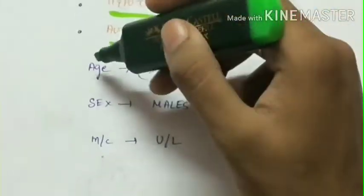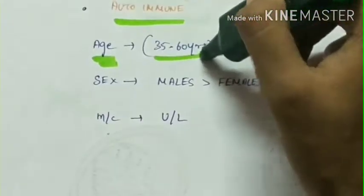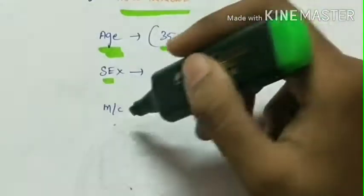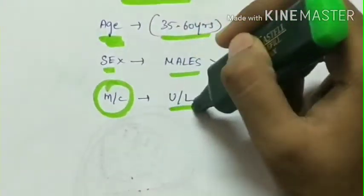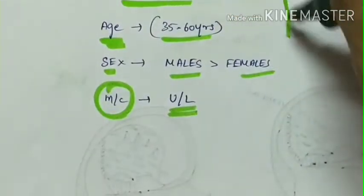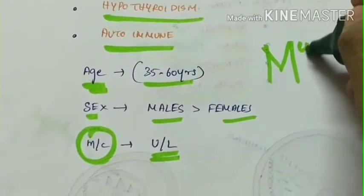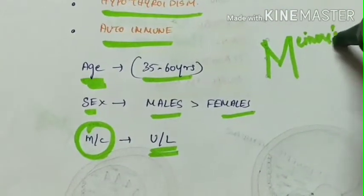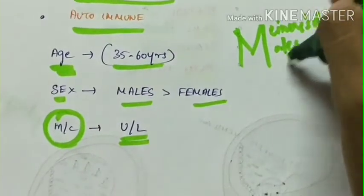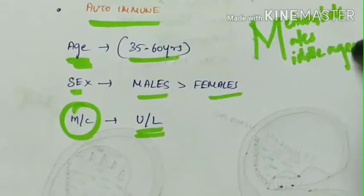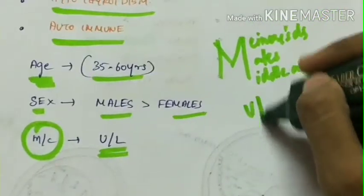Meniere's disease is more common in middle age 30 to 60 years. It is more common in males than in females and is most commonly unilateral. Meniere's disease can be remembered as three M's: M for Meniere's disease, most common in males who are middle aged, and this is unilateral.